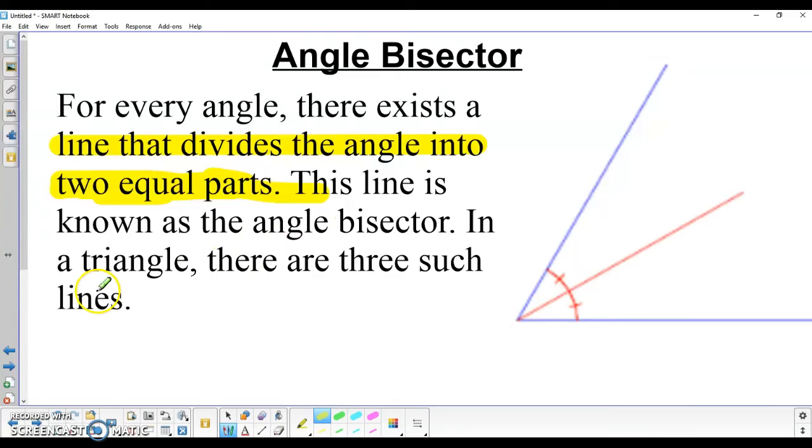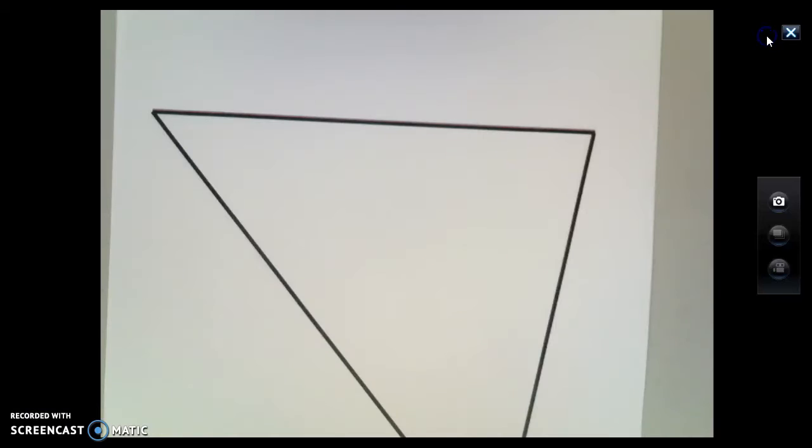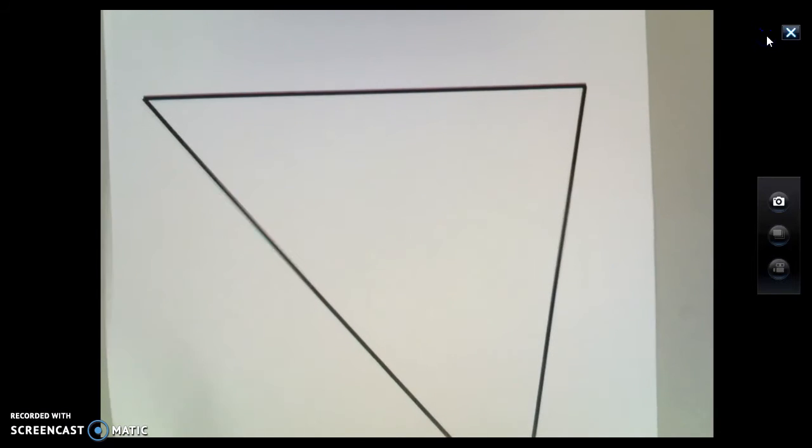In a triangle, since there's three sides, there's going to be three angles and thus three angle bisectors. So if we go back to our triangle that we've been working with here, we're going to need a protractor in order to do this successfully.